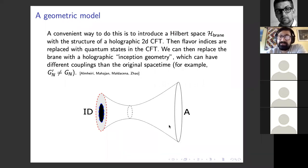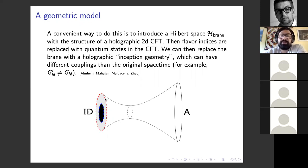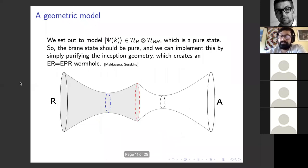An important note for later: the inception geometry can have different couplings than the original spacetime — there's no need for the theory on the brane to have precisely the same central charge as the asymptotic theory on the boundary. We set out to model the state psi_k, which is a state in the tensor product Hilbert space of the radiation system and the black hole system — an overall pure state. So far we've only modeled the psi_i portion. What it means for the full state to be pure is that the state we choose on the brane should actually be pure — not just a black hole — so we should purify the inception geometry.